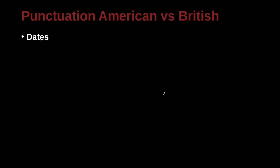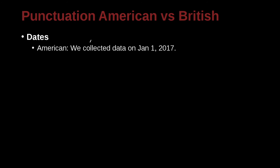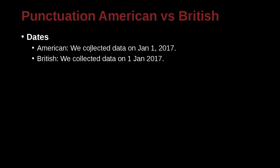Let's look at some other differences, and that would be in dates. In American common usage, the date is written as, for example, January 1, 2017 — no space before the comma, one space after. In the British approach, we reverse things: we collected data on 1 January 2017, with no comma at all anywhere, and the day comes first.